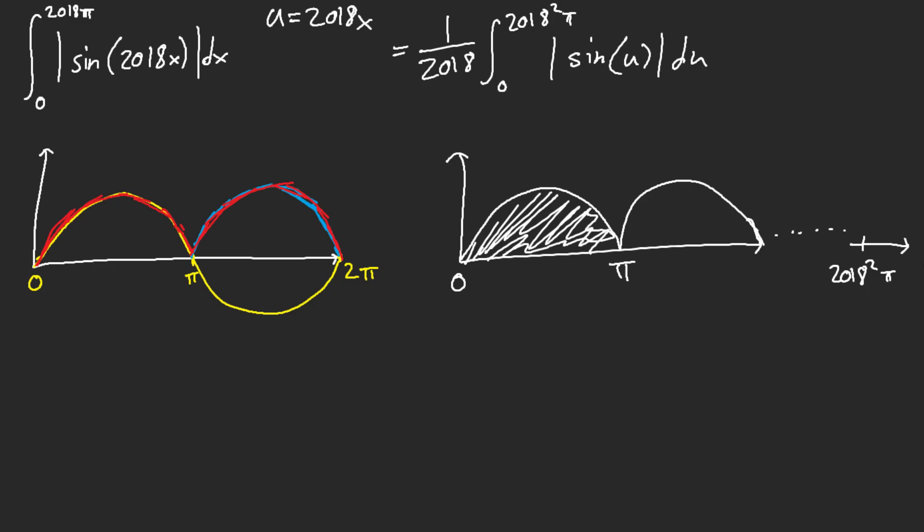So, what is my shortcut here? This graph is telling me that this is equal to 1 over 2018 times, then however many times this hill is. That's the only hard part.